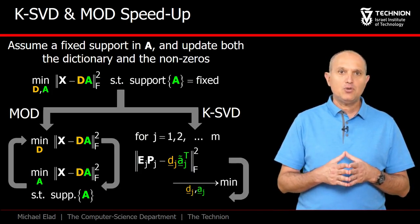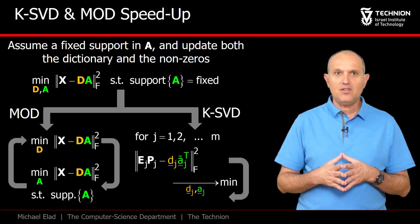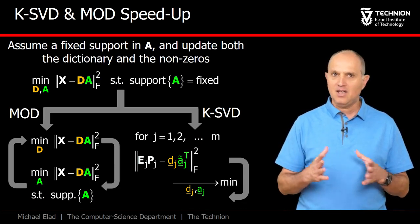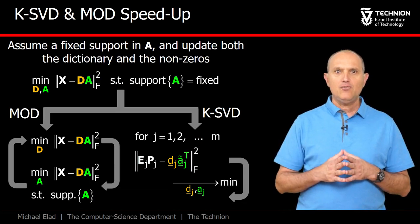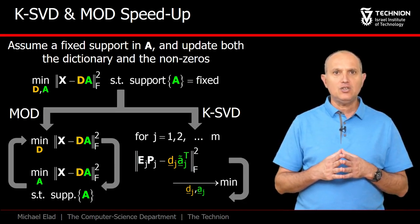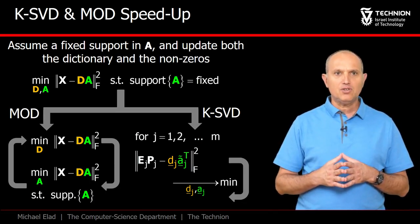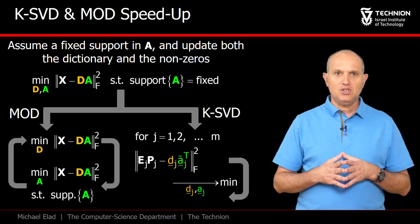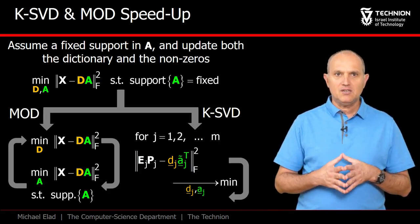The KSVD approach is even simpler. All that is needed is to apply the sweep through all the M atoms in D several times, and that's it. By the way, if you are wondering about the additional complexity, don't be. Most of the effort in dictionary learning algorithms reside in the pursuit stage, where we compute the alpha Js. Thus, the changes we are describing here are rather negligible.